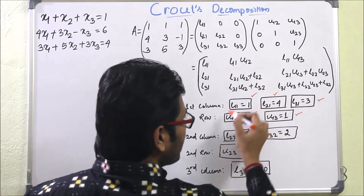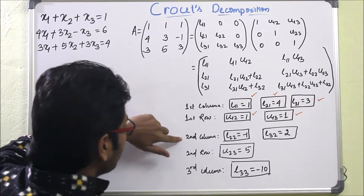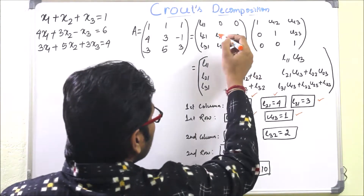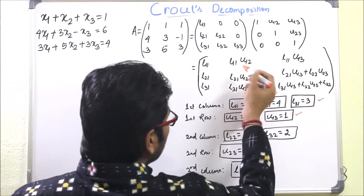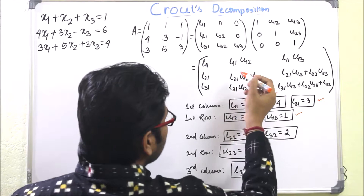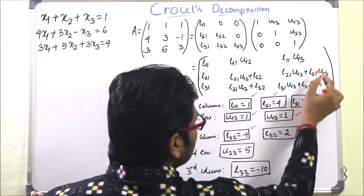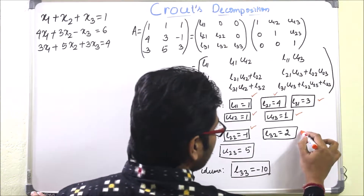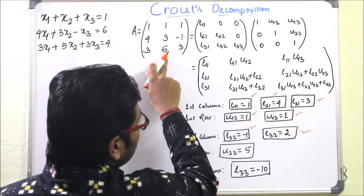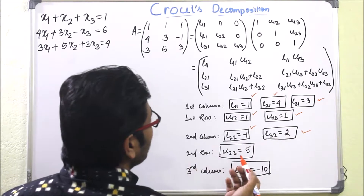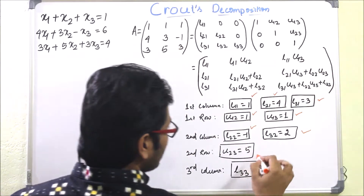Using the known values, we calculate the remaining entries. For L22: equating with A22 = 3 and substituting the previously found values gives L22 = −1. Similarly, L32 = 2. Then for U23: equating with the A23 element (−1) and solving gives U23 = 5.